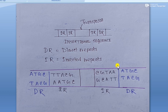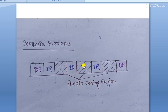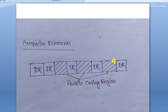The next structural type is composite elements. Composite transposons contain two or more protein-coding regions, and between those protein-coding regions there is a presence of IR sequence — meaning the different protein-coding regions are separated by IR. They also have DR portions at the first and last regions of the transposable element.